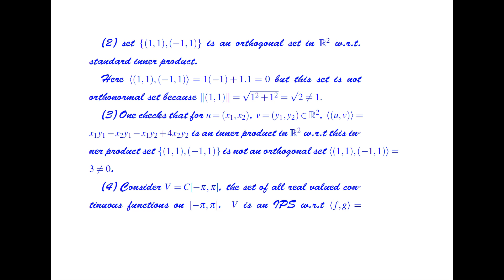The set {(1,1), (-1,1)} is an orthogonal set in R^2 with respect to the standard inner product, since the inner product of (1,1) and (-1,1) equals 1·(-1) + 1·1 = 0. However, this set is not an orthonormal set because the norm of (1,1) equals the square root of 1² + 1² = √2, which is not equal to 1.